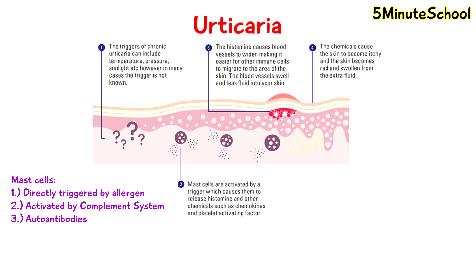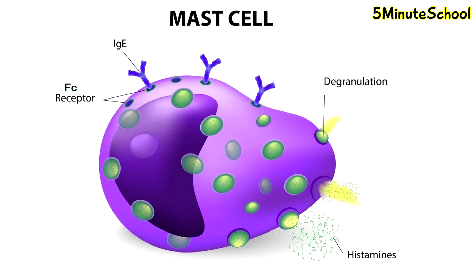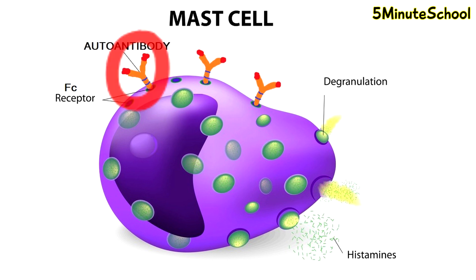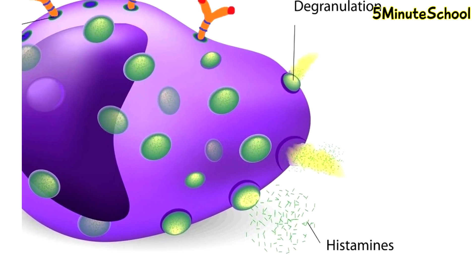It has also been noted that mast cells can be directly triggered by an allergen and activated by the complement system. It's also known that some people who have hives have some kind of autoimmune disease. What happens is they have autoantibodies which bind onto FC receptors on mast cells. Normally, these FC receptors bind with antibodies associated with allergies like IgE, and that stimulates an allergic response — a true allergy that is there to protect the body. However, the autoantibodies bind onto the FC receptors, tricking the mast cells into thinking that an allergen is present, and this can happen frequently. So mast cells start releasing histamine as though there's an allergy even though there isn't.